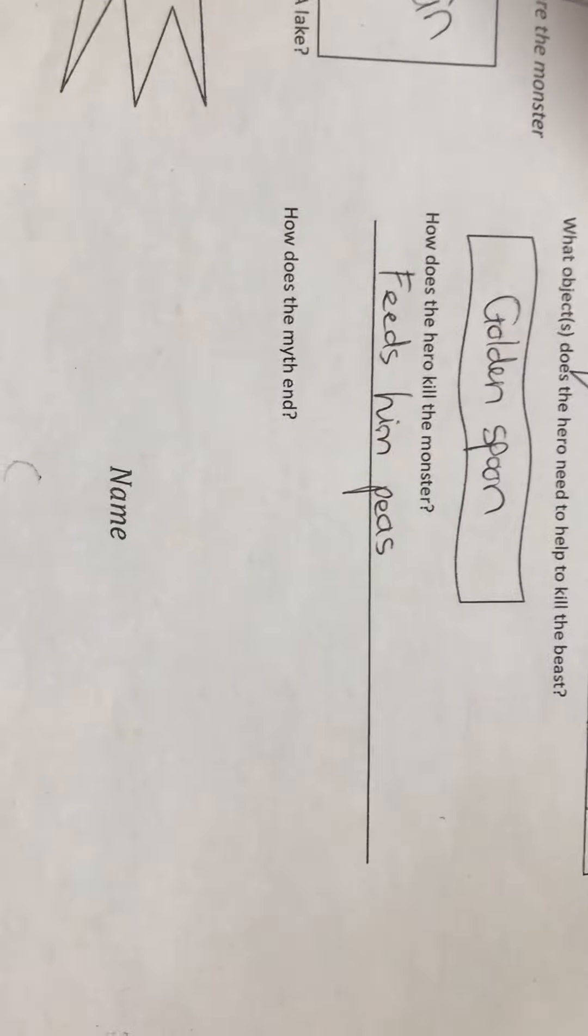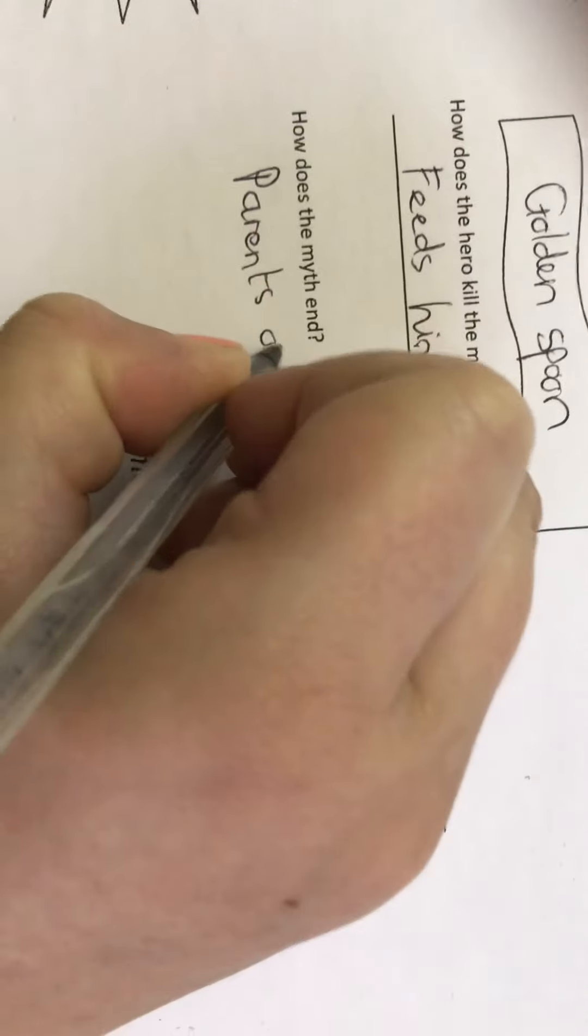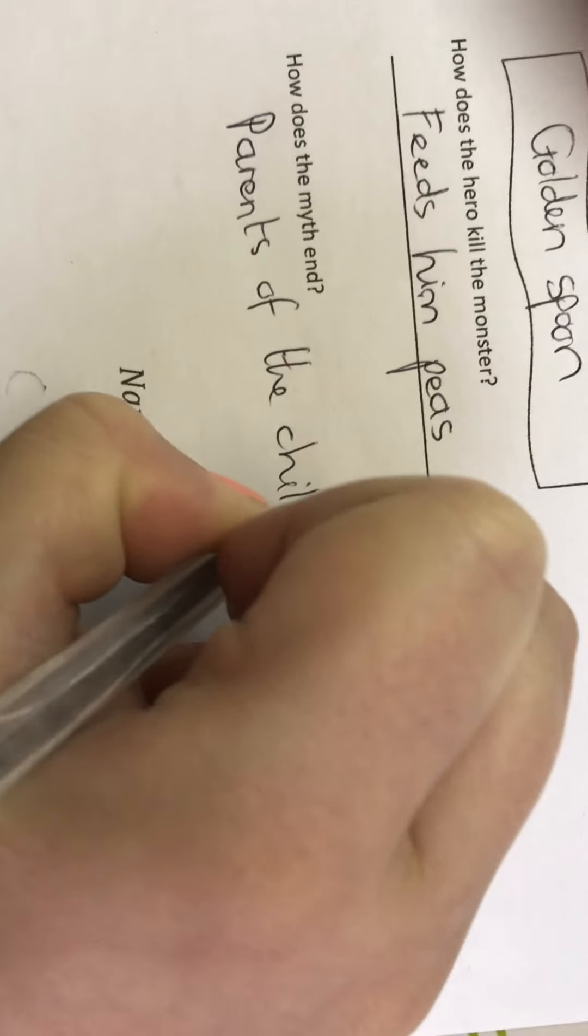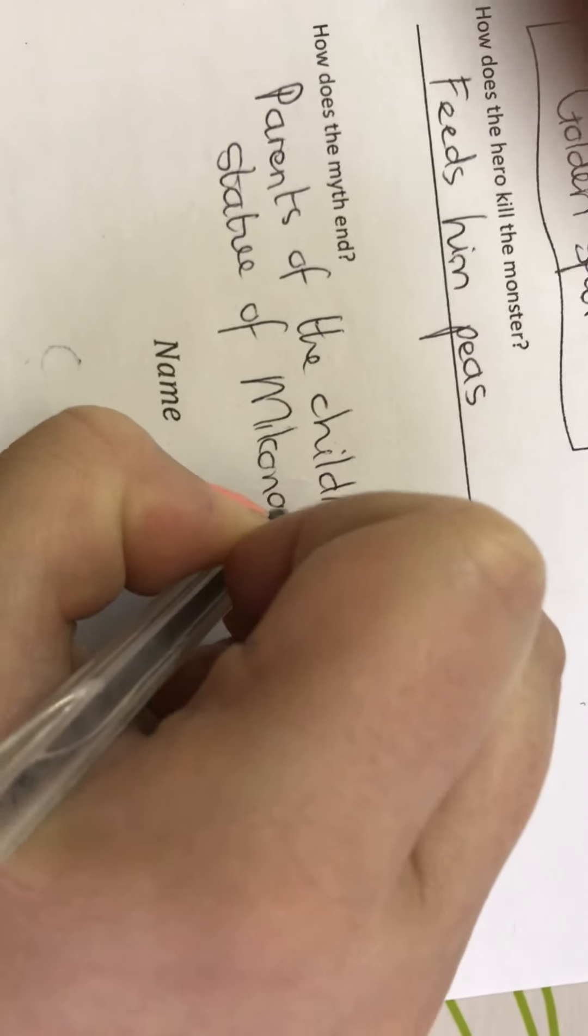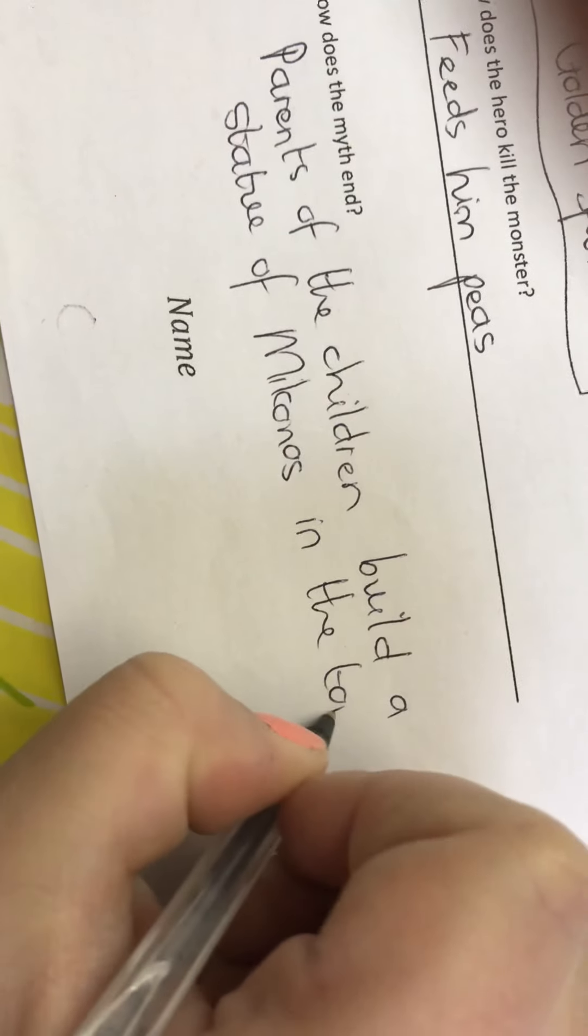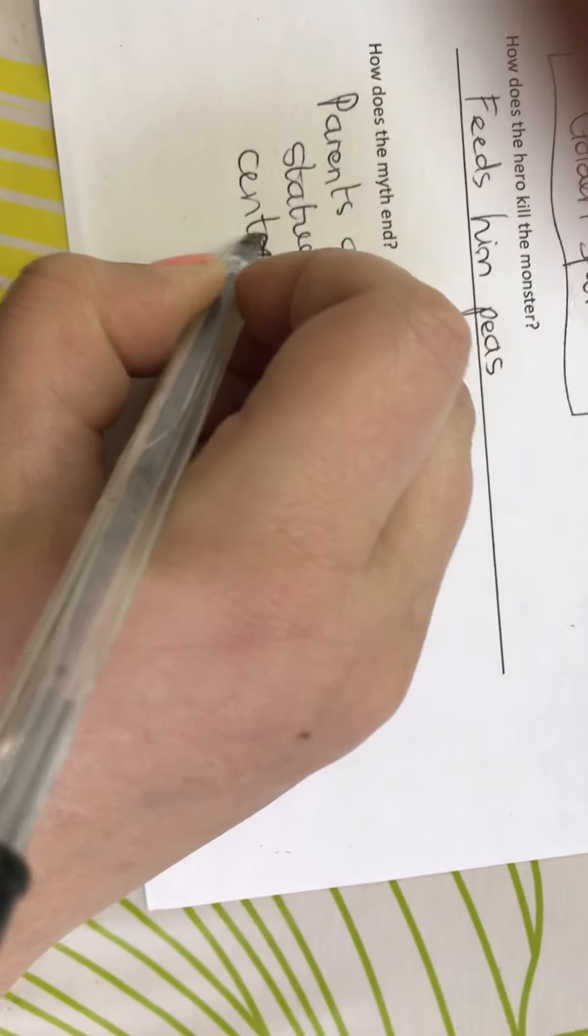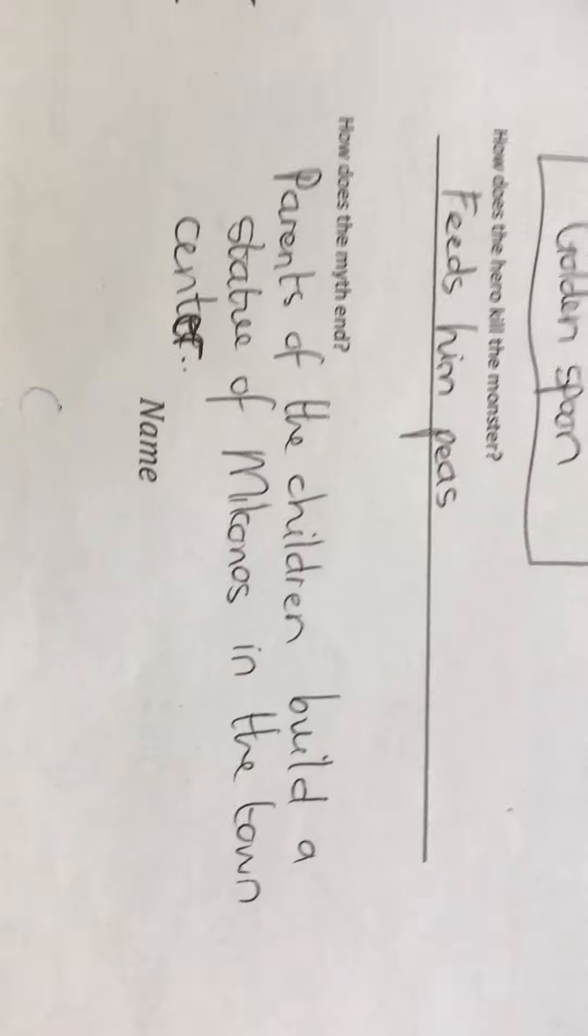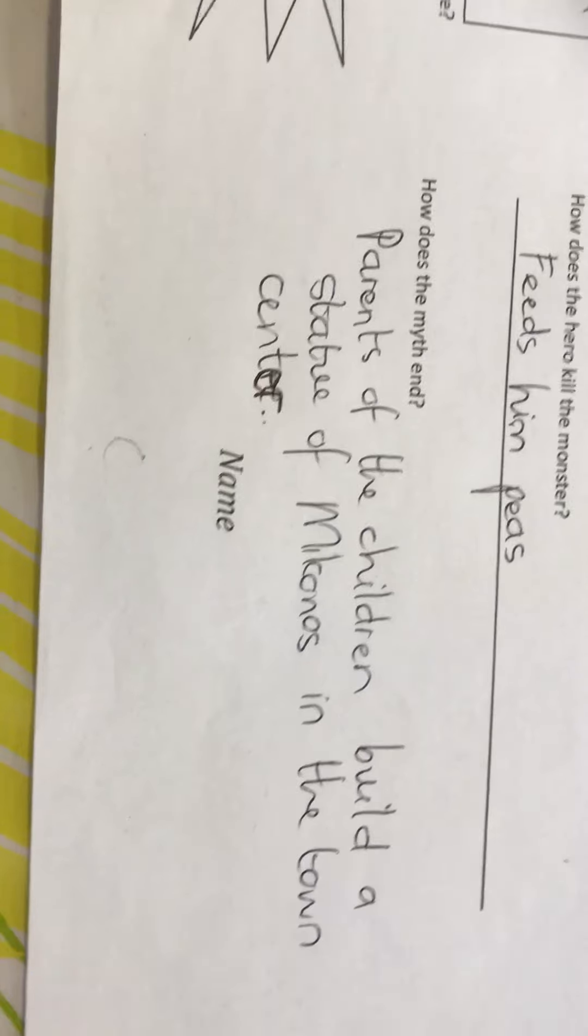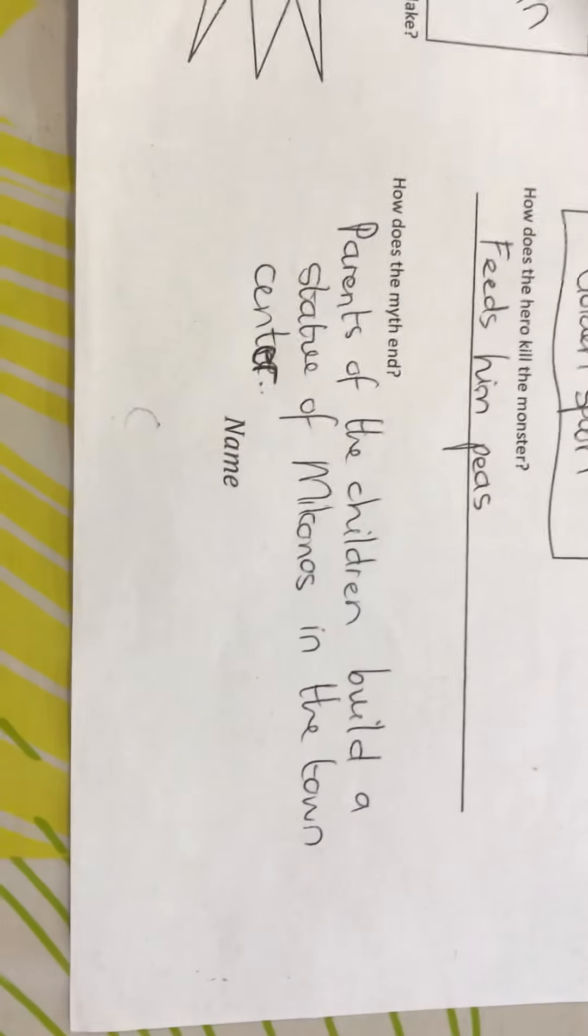And then how does the myth end? Mine ends with the parents of the children build a statue of Mykunos in the town center. That's how mine ends. The parents of the children that were going to be fed to the Rab Cat build a statue of Mykunos in the town center. You guys can choose how yours end. Make it a happy ending. Actually, if you don't want to make it a happy ending, you don't have to. It's your story.